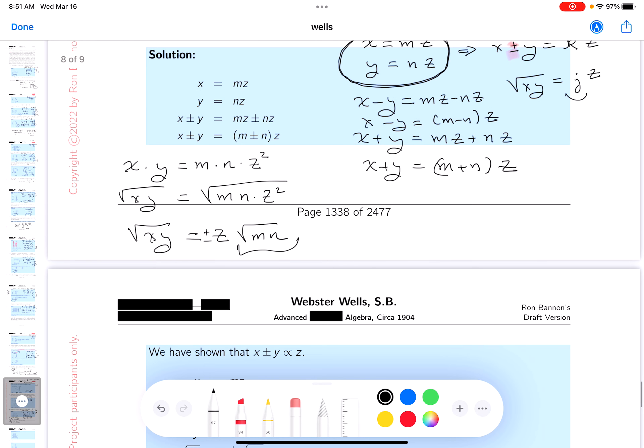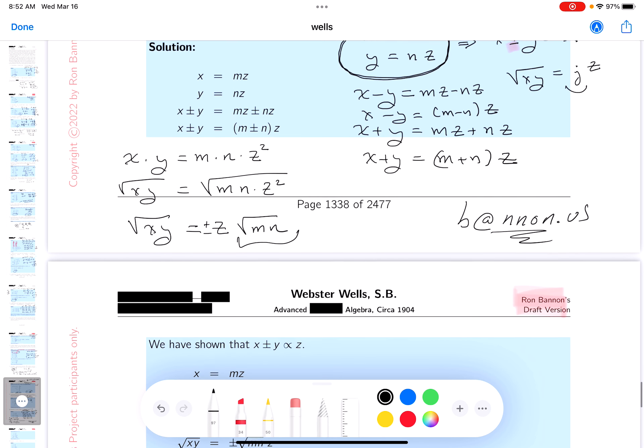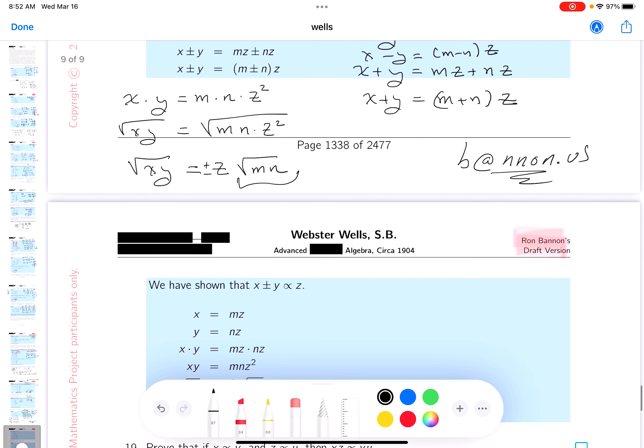All right? So let me just remind you who I am again. My name is Ron Bannon, and my email is Bannon, B as in boy, the at symbol, N-N-O-N dot U-S. And again, if you see some error in the problem set or some reason for concern that you think would improve the document, I'd love to hear from you. Thank you.